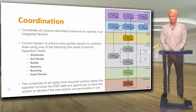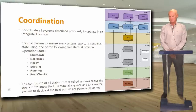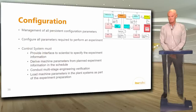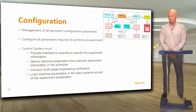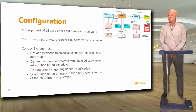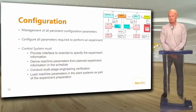Then we need coordination. All systems need to be operated in an integrated fashion. We have defined synthetic states which all systems must obey, and the composite of all states allows the operator to know the ITER state at a glance and to permit or prohibit the next action. We also have a lot of configuration to manage — all these persistent configuration parameters must survive system reboots, reinstallation of both hardware and software. We also need to manage all parameters required to perform an experiment; the control system must provide an interface to the scientist to specify the experiment, derive machine parameters, conduct engineering verification, and load those parameters into the plant system.